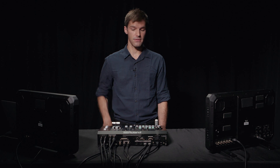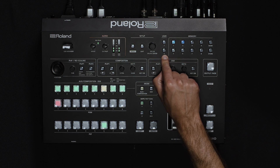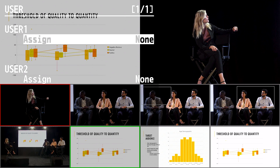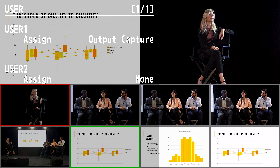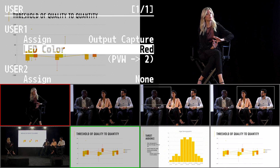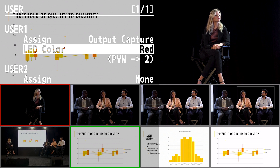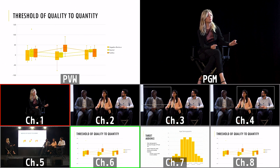You can also assign the output capture function to a user button. On the panel, you can see there are two user buttons with which you can map functions. To do that, press the menu button, enter the user menu, and assign a function to the user button. You can also change the LED color of the button, and it will mirror the output capture menu settings in the system menu. To demonstrate, I'm going to change the slide on my presentation and then press the user one button to show you the new capture.